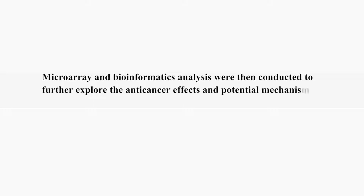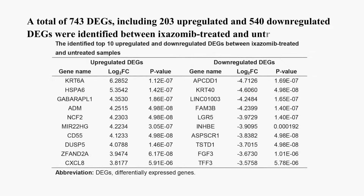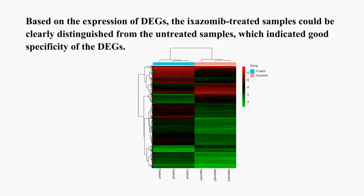Then, we conducted microarray and bioinformatics analysis to further explore the anticancer effects and potential mechanisms of exosomib on colorectal cancer cells. According to the microarray results, a total of 743 differentially expressed genes, including 203 up-regulated and 540 down-regulated DEGs, were identified between exosomib-treated and untreated samples. Based on the expression of DEGs, the exosomib-treated samples could be clearly distinguished from the untreated samples, which indicated good specificity of the DEGs.